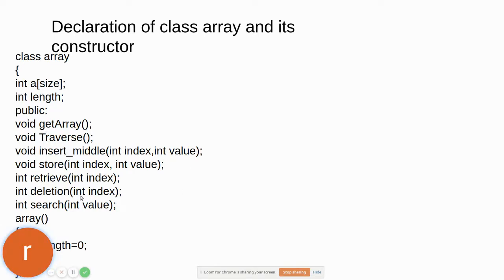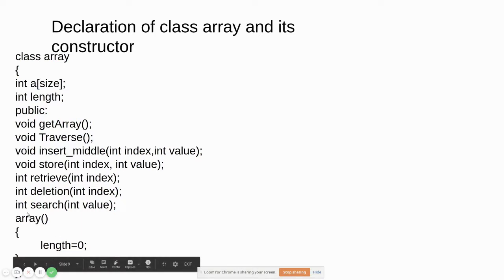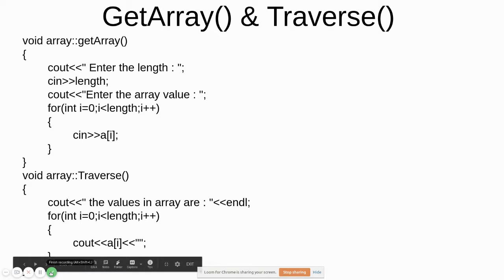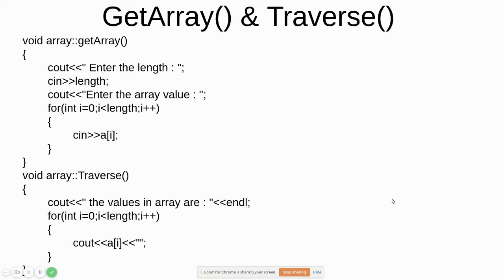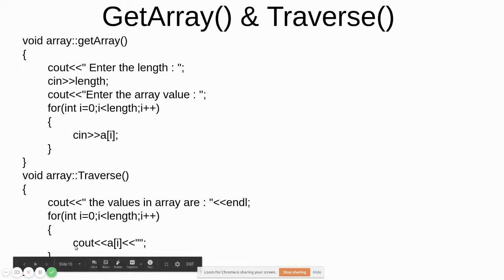The member functions include getArray, traverse, insert middle, and others as explained. We declare a constructor where we initialize length equal to zero, since initially there is no data in the array. In getArray, we use a cout statement to get the length — for example if size is 20 and we want to store 10 elements, length will be 10 — then we use a for loop to get the values. For traverse, we print the values using cout.